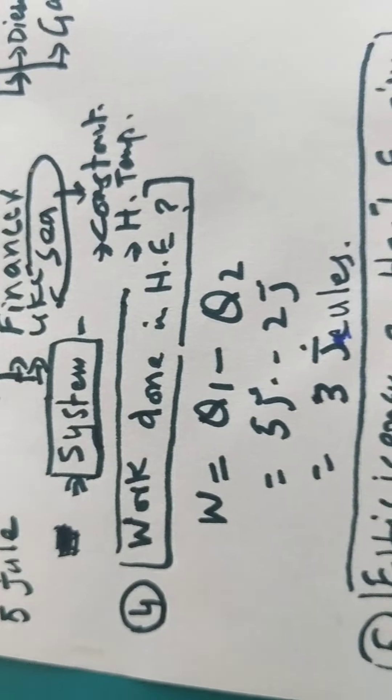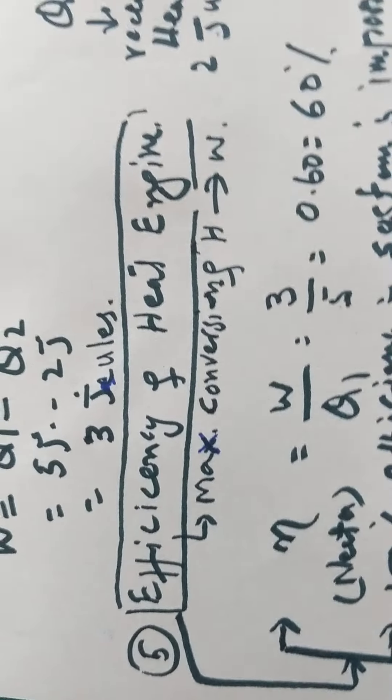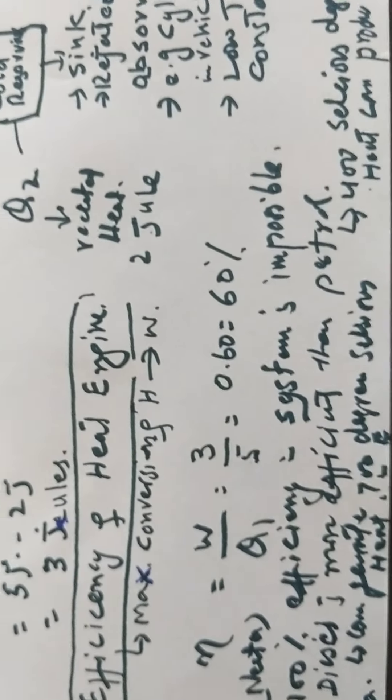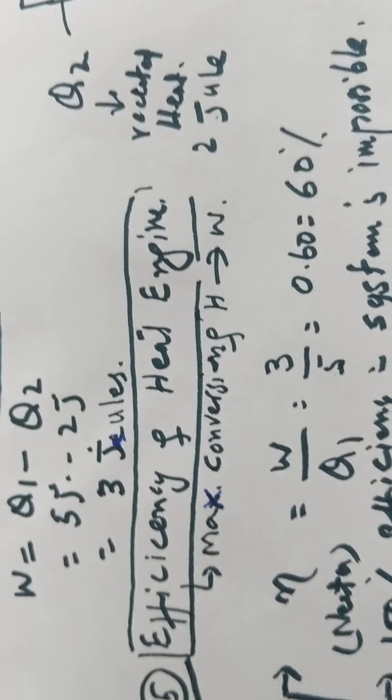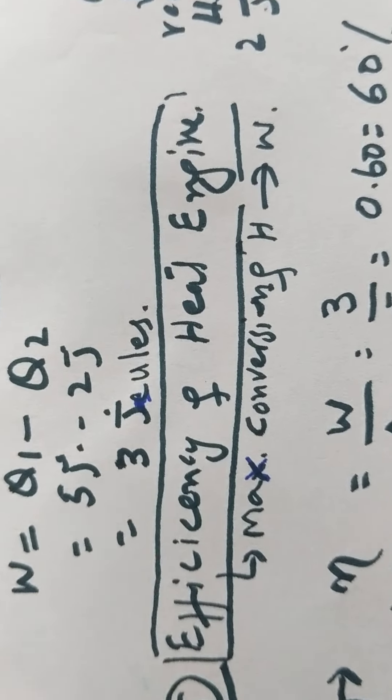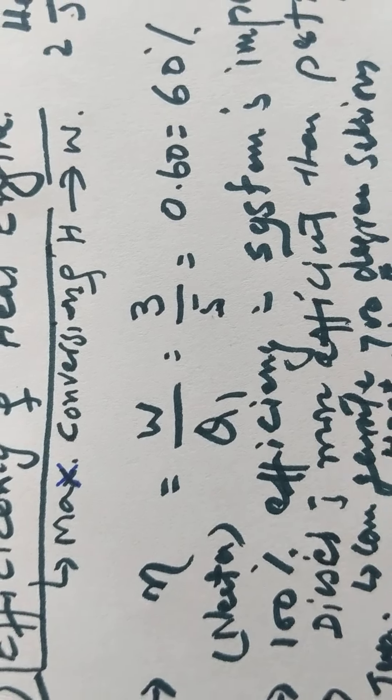Now, efficiency of heat engine. How can we calculate it? It's very simple. Efficiency means maximum conversion of heat into work. The formula is η = W / Q1.